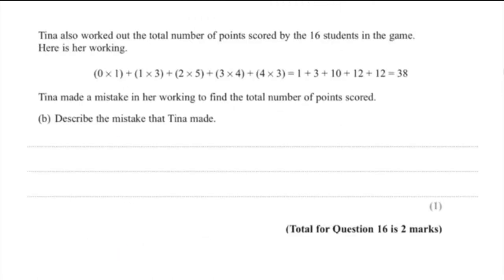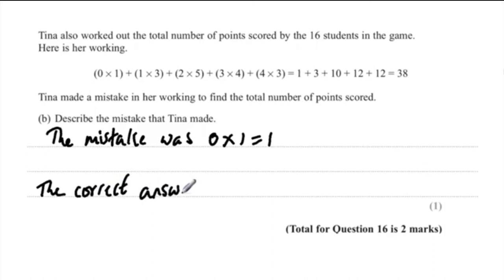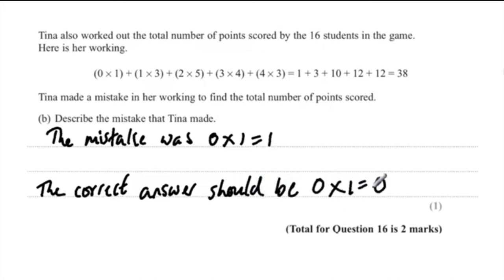Question 16B: Tina made a mistake in her working to find the total number of points scored. The mistake was in the calculation 0 times 1: Tina wrote 1, but the correct answer should be 0 times 1 equals 0.